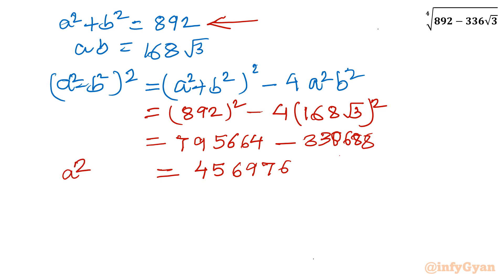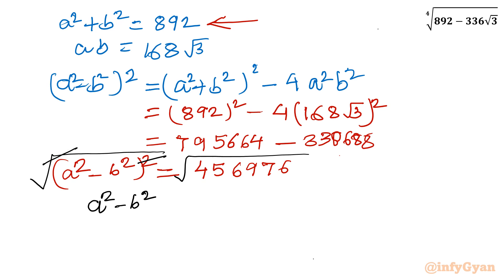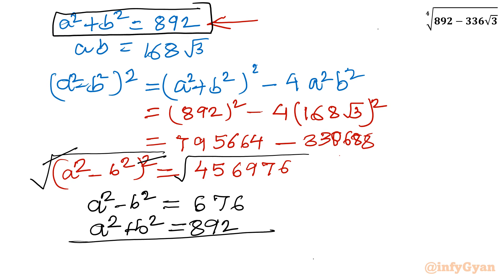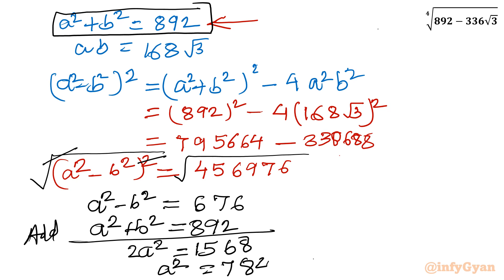This value 456976 is the value of a squared minus b squared whole square. Taking square root of both sides, we cancel the square and square root, so a squared minus b squared equals 676. Now a squared plus b squared is 892. Simply adding both equations, 2a squared equals 676 plus 892 which is 1568, so a squared equals 784. Taking square root, a equals 28.